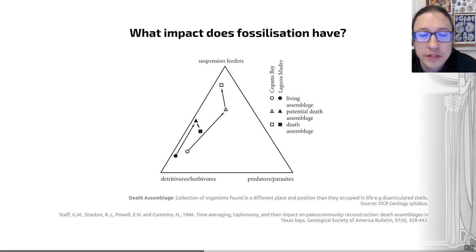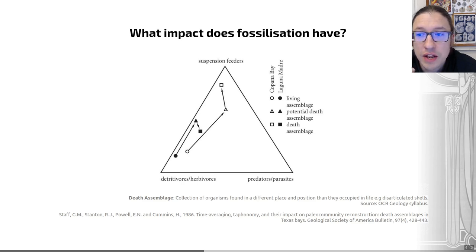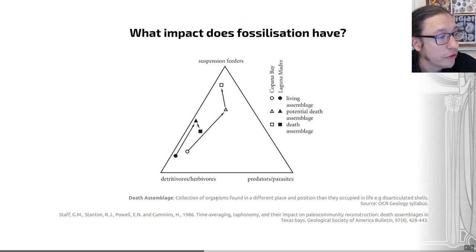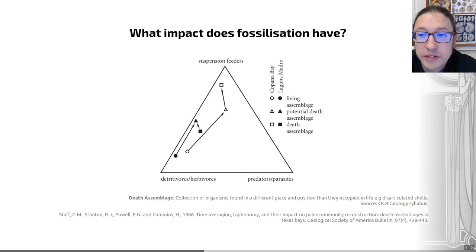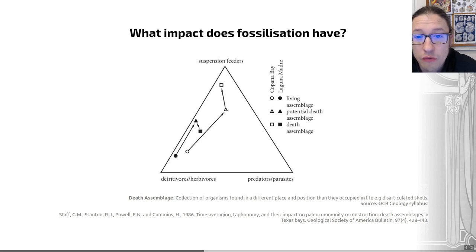We can assess the impact of this in a number of ways, and one of those is to look at the similarity of a death assemblage to its living counterpart. A death assemblage is the collection of organisms found in a different place and position than they occupied in life, such as disarticulated shells. This is the majority of what we see in the fossil record, and we can compare that to living counterparts to assess its fidelity in a few different ways.